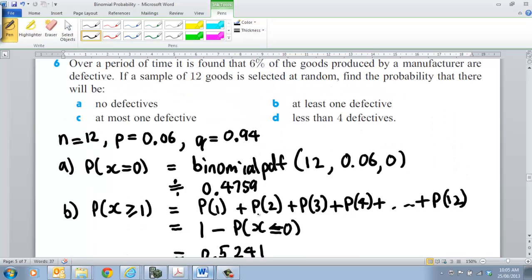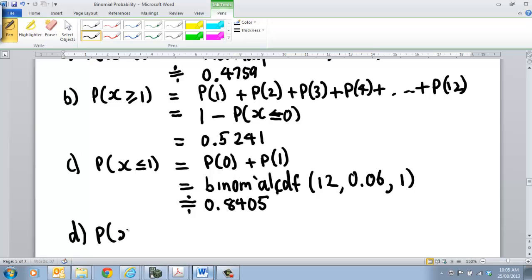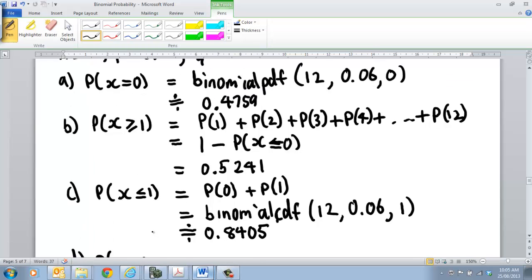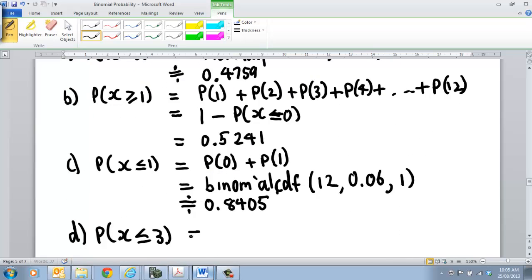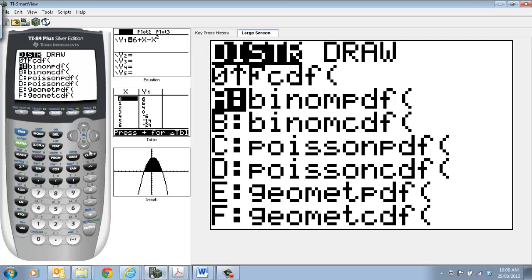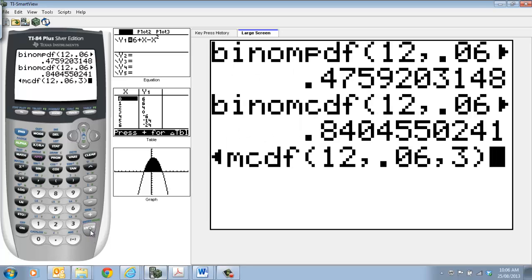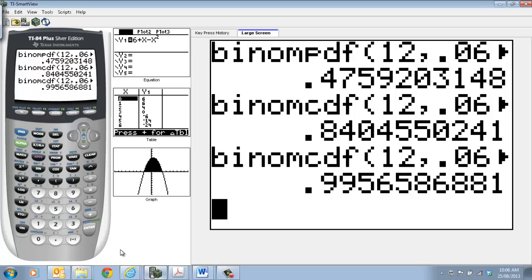And then the last one that we have to do, part D: less than 4 defective. So less than 4 defective means 0, 1, 2, or 3. So we can say that's equal to the probability of X being less than 4, less than or equal to 3. So that's equal to the binomial CDF, and then we're looking at 3. So we go to our calculator. It's going to be the up arrow, the same thing as what we just did. Getting to our CDF. Everything else is the same, we're just going to change that to a 3. So that will work out 0, 1, 2, and 3, and tells us that we've got a 99.57% chance.